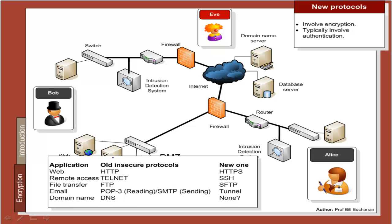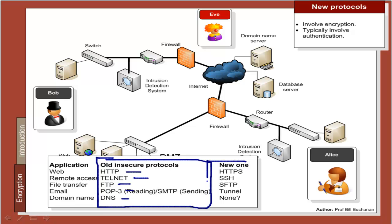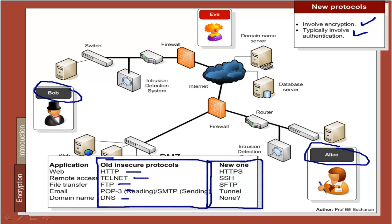Unfortunately, the protocols created to allow communications are typically text-based and are considered insecure. We are moving away from insecure protocols such as HTTP, Telnet, FTP, POP3, SMTP, and DNS into new protocols that typically involve some sort of security — either encryption or integrated authentication. These new protocols typically involve both encryption and some form of authentication, and as we will see, authentication is just as important as security.